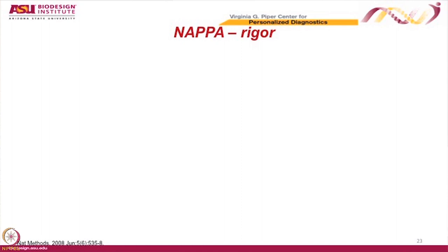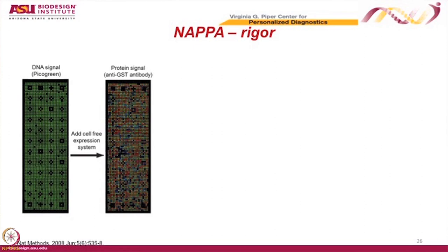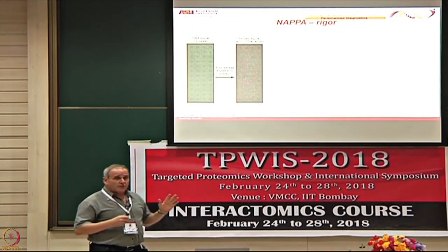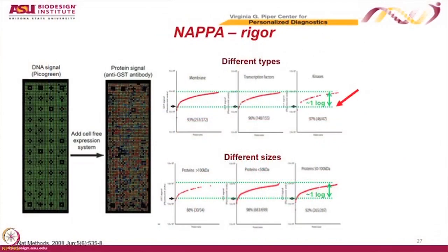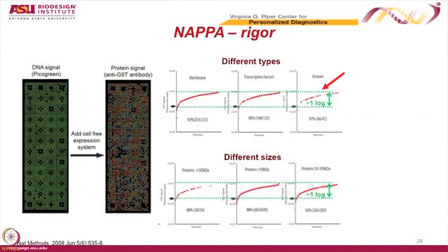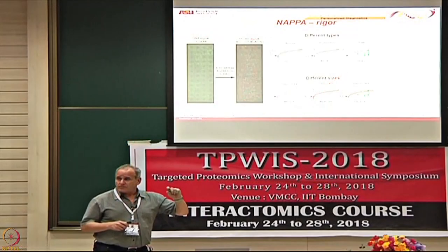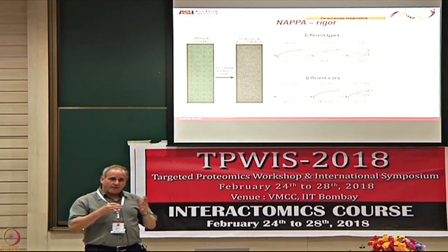A key question for rigor is how well the platform expresses all proteins. We test the array for DNA binding — which tells us how evenly we printed — and for protein expression — which shows we're displaying all different proteins at a reasonable level. For membrane proteins, transcription factors, kinases, and small, medium, and large proteins, almost all fall between the minimum detection threshold and maximum detection, spanning only a single log. The vast majority of proteins are within twofold of the mean — they're all very close together.